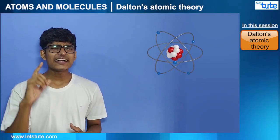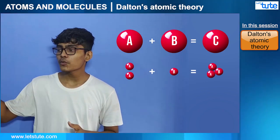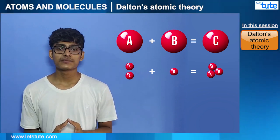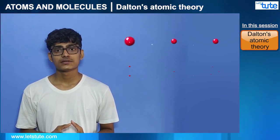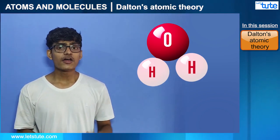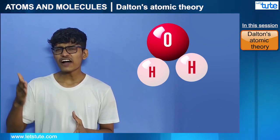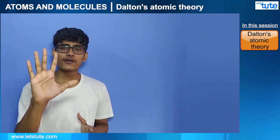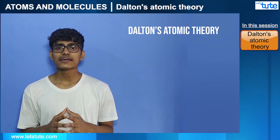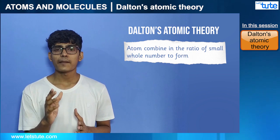We know that atoms cannot be divided further. In compound C, we can't have 0.5 atom of element A or 2.5 atoms of element B — it will have whole numbers. Same with the water molecule: it has two hydrogen atoms and one oxygen atom; it can't have half atoms. This states the fifth important point of atomic theory: atoms combine in the ratio of small whole numbers to form compounds.